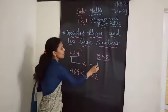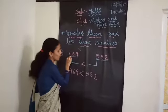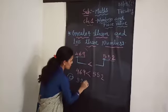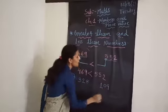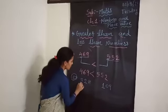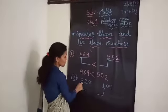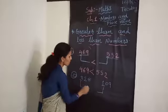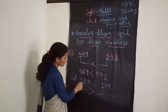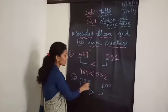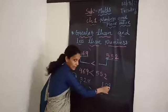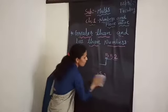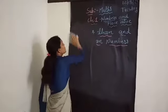For greater than or less than, first you have to compare the numbers starting from the Hundreds place value. Let's take one more example: 328 and 109. Select the Hundreds place number — here it's 3 and here it's 1. So 3 is bigger and 1 is smaller. For the bigger number we put the greater than sign. So we can say that 328 is greater than 109.